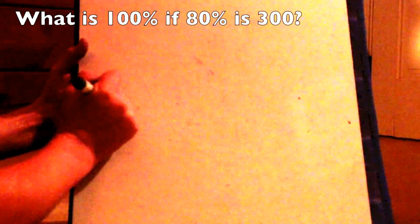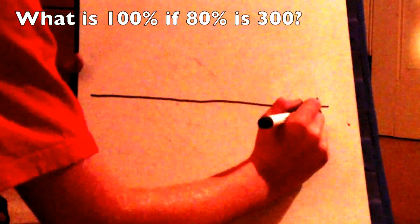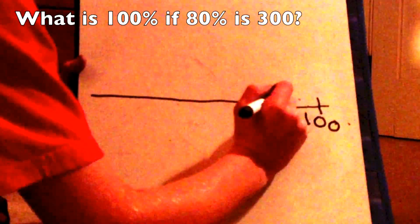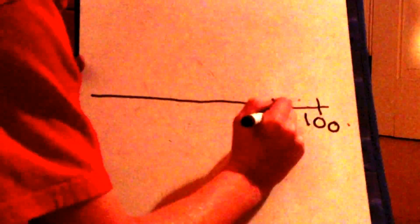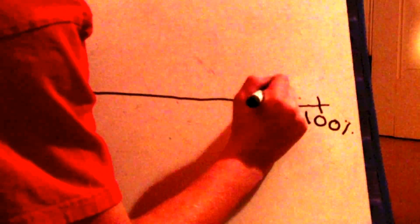For this problem, we know what 80% is, but we don't have 100%. So to find this, just plot 100% and 80% down. 80% is information we know, like I said. And in this case, 80% is 300 for this problem.